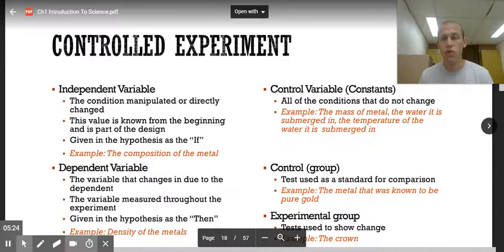The control variable, those are the things that are held constant. They are the conditions that will not change no matter what we do in the experiment. So that will be the mass of the metal. We're not going to add more to it or take some off of it. It's the water that it's submerged in. We're not going to change the water in any way by adding salt or anything else. The temperature of the water is also the same that's being submerged in. If I put it in cold water, I'm going to put the other one in cold water.